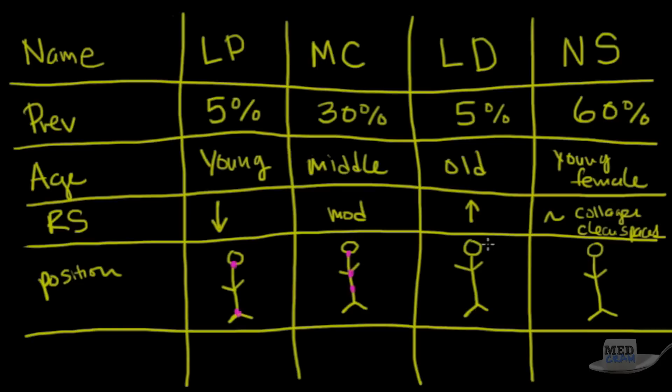In lymphocyte depleted, we really only see it in the retroperitoneal area or in the viscera, so abdominal once again. And finally, in nodular sclerosis, we see it there in the cervical and in the mediastinal area or in the chest. So that kind of gives you an overview here of the type of distribution that we see that in.